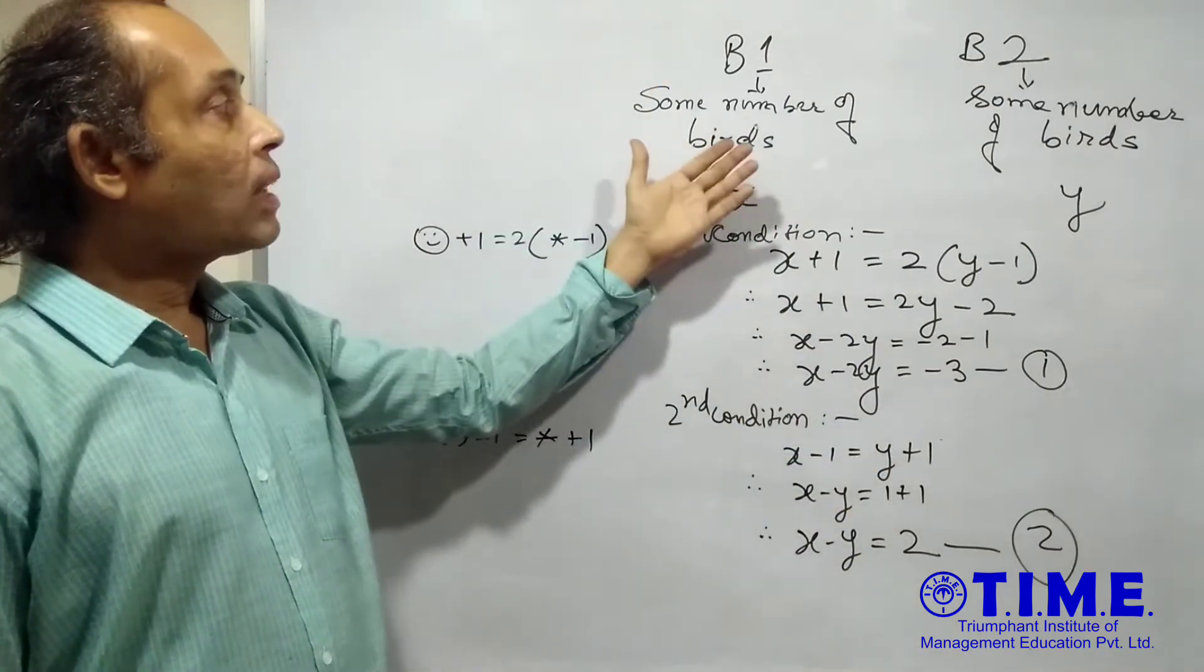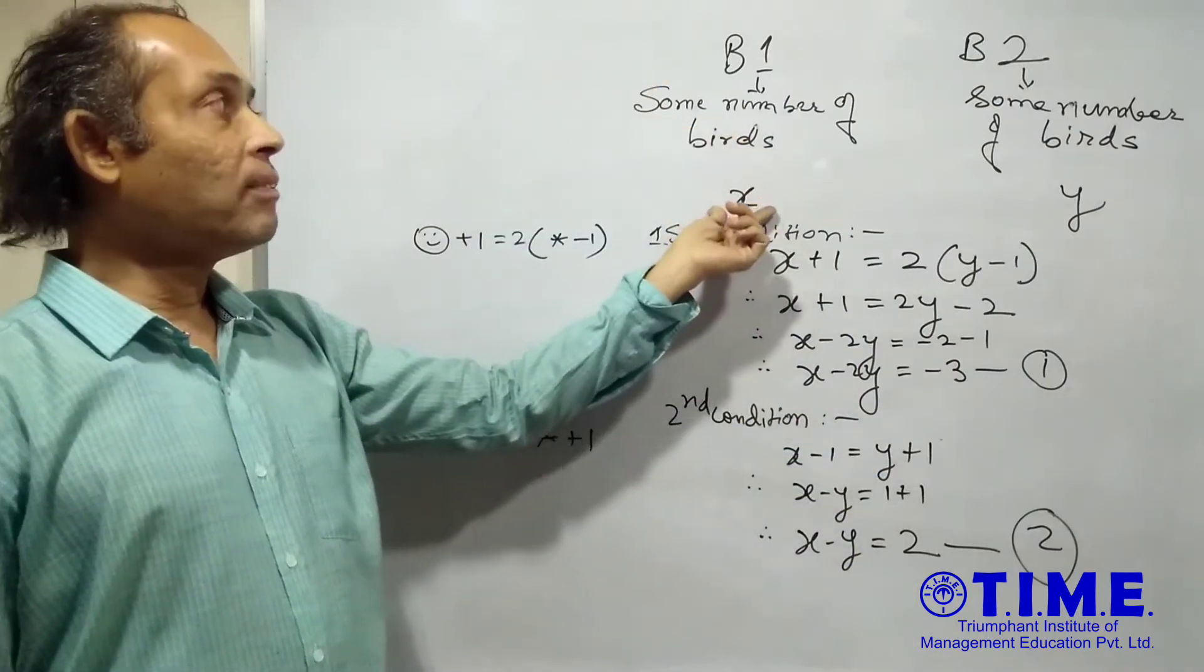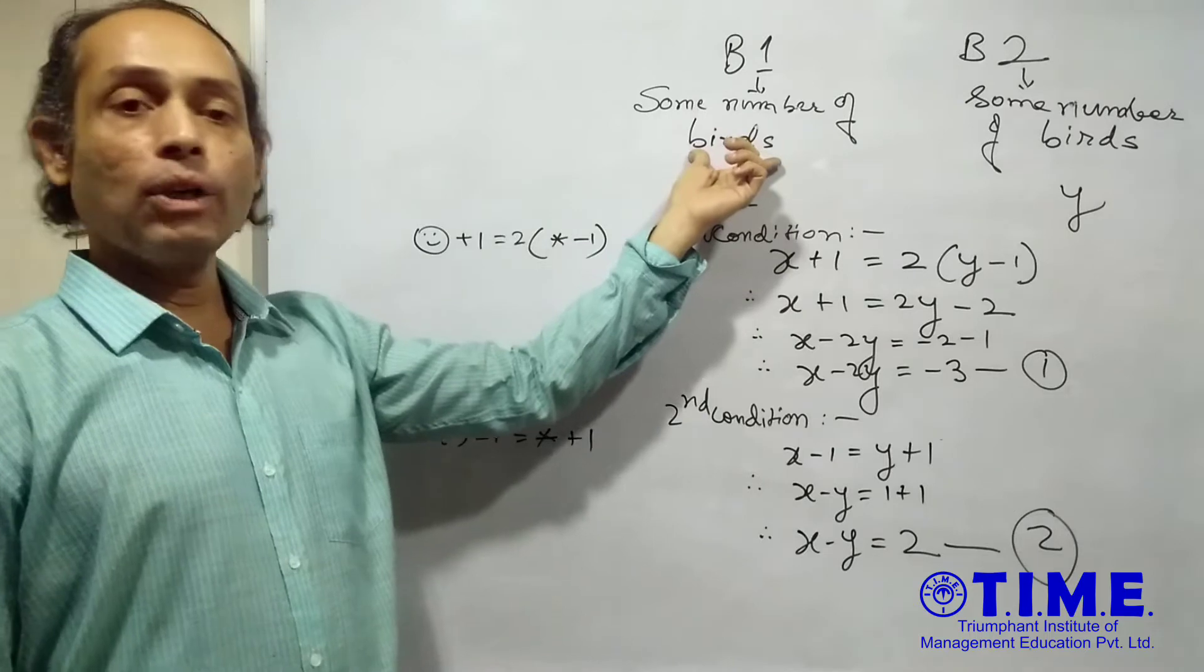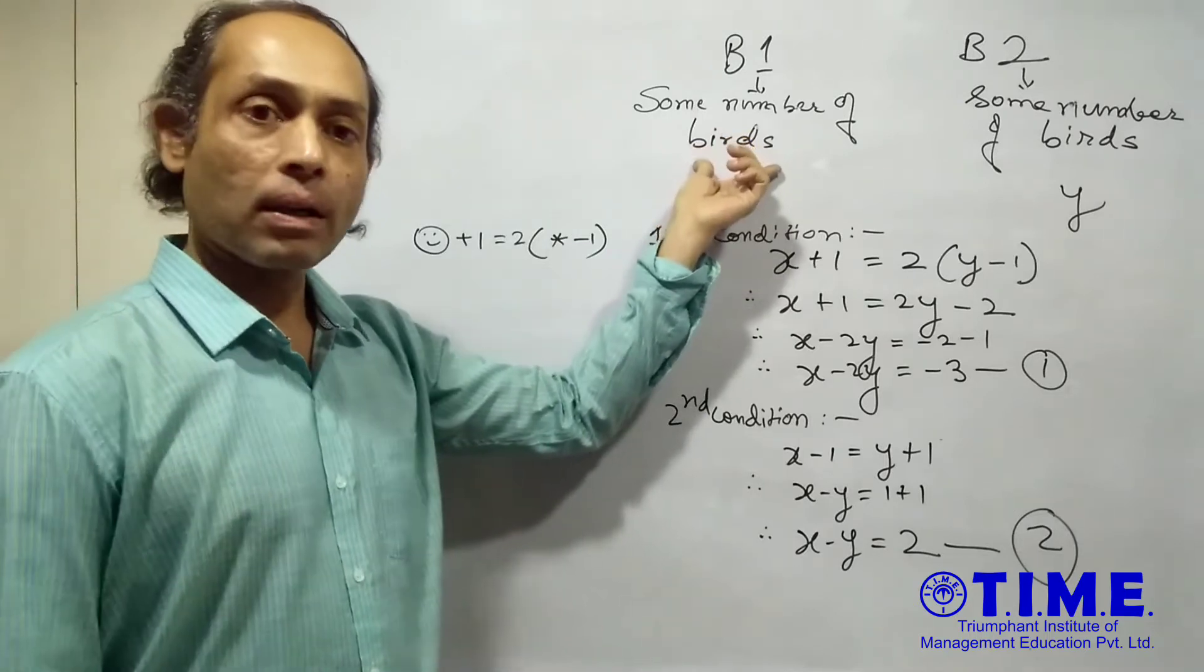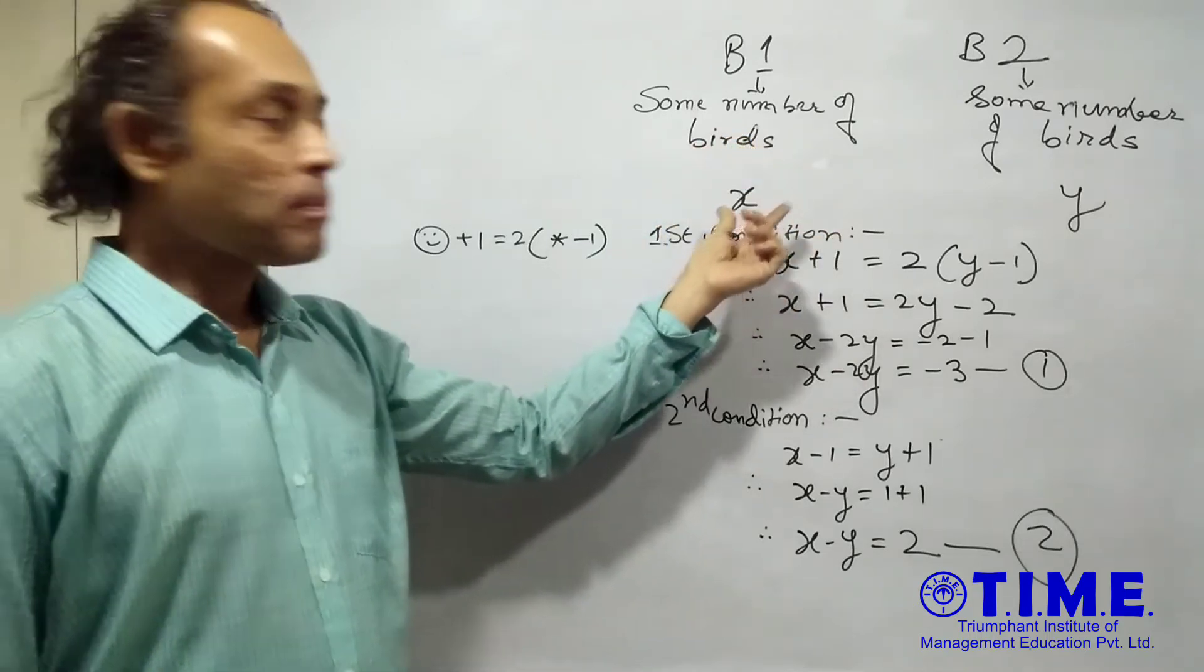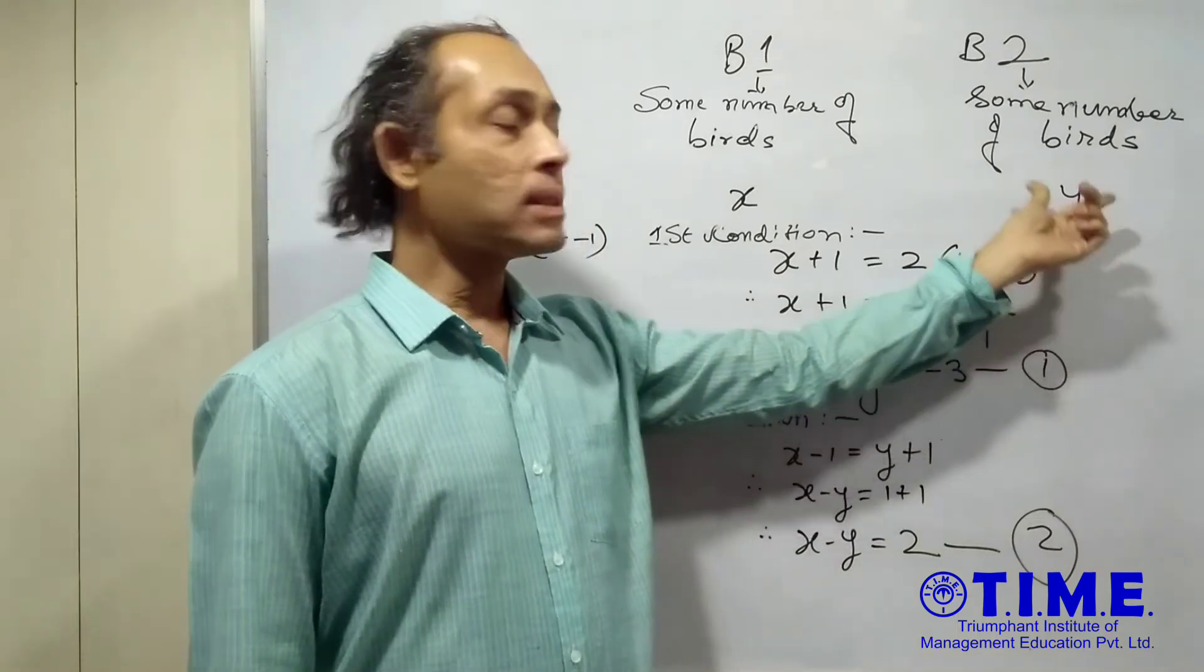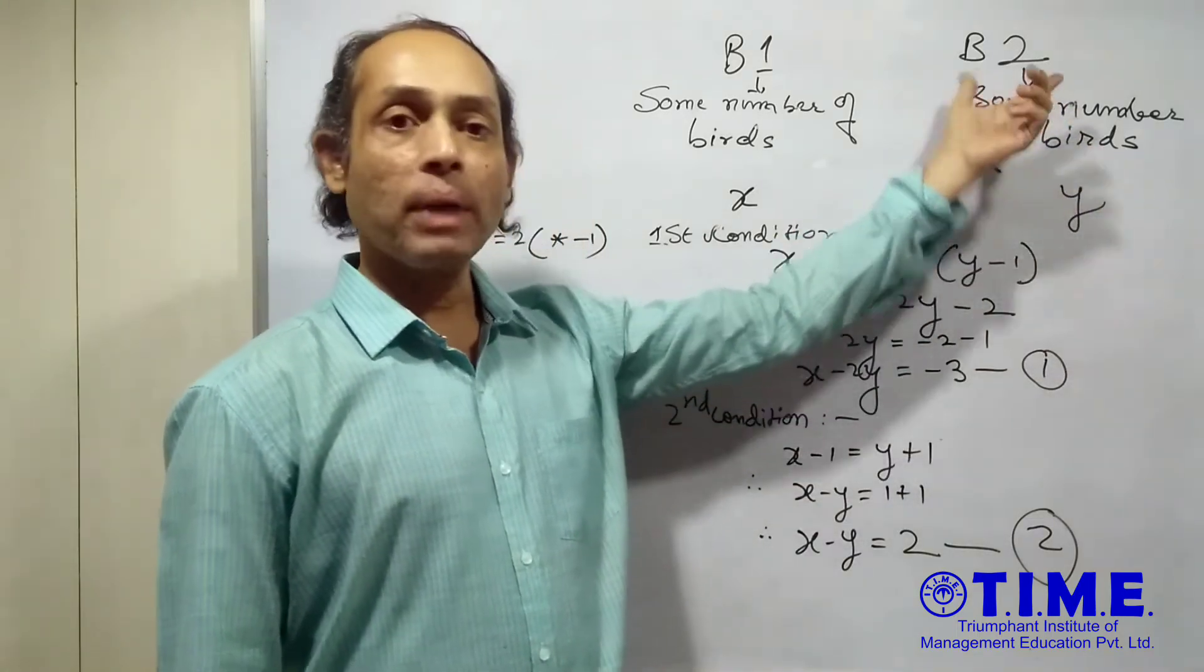Now, what I have done is, I have taken this particular variable to denote the number of birds sitting over here on branch B1 as X and the other variable I have taken is Y which is the number of birds sitting on branch B2.